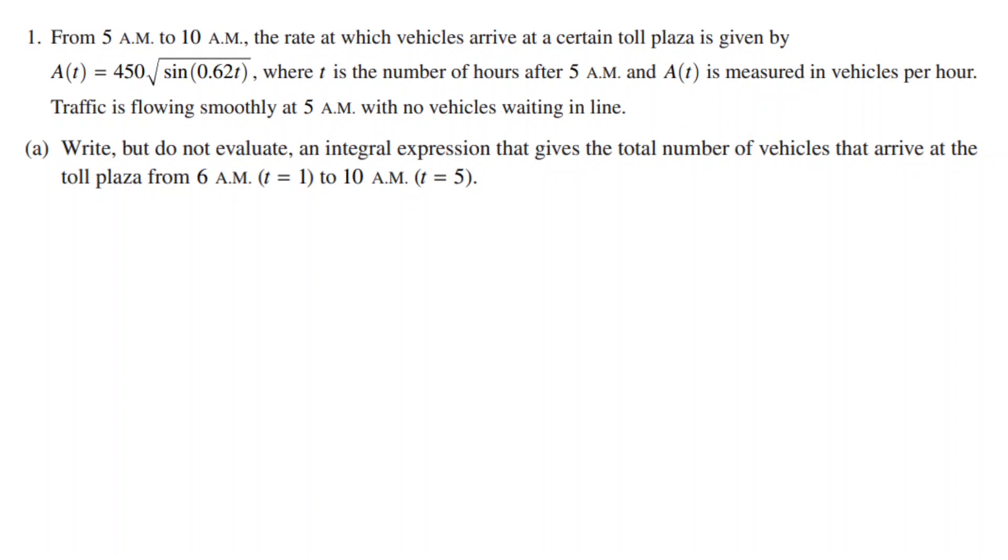Question 1 tells us that from 5am to 10am, the rate at which vehicles arrive at a certain toll plaza is given by A(t) equals 450 times square root of sine 0.62t, where t is the number of hours after 5am, and A(t) is measured in vehicles per hour. Traffic is flowing smoothly at 5am with no vehicles waiting in line.